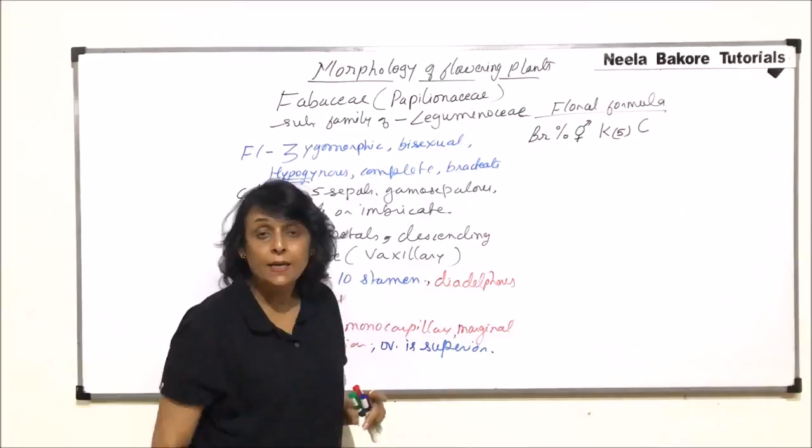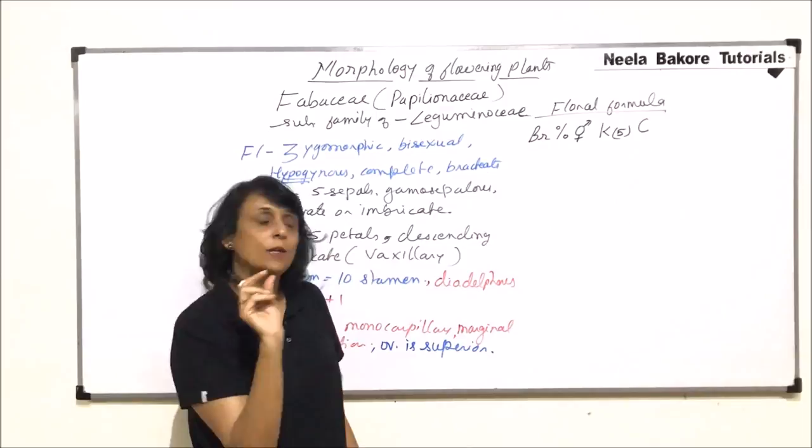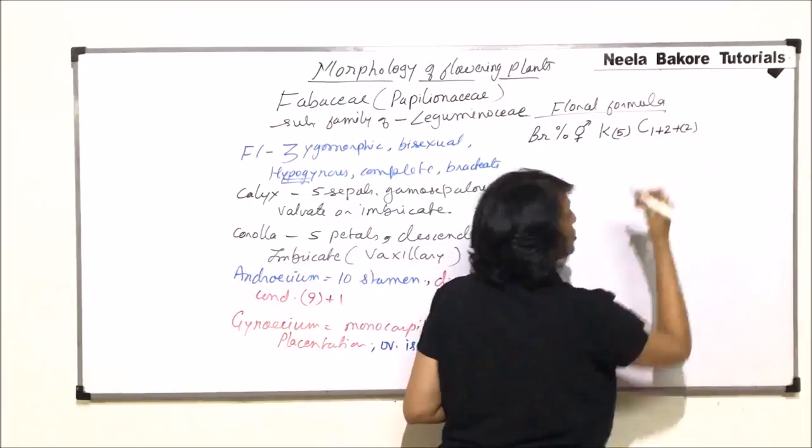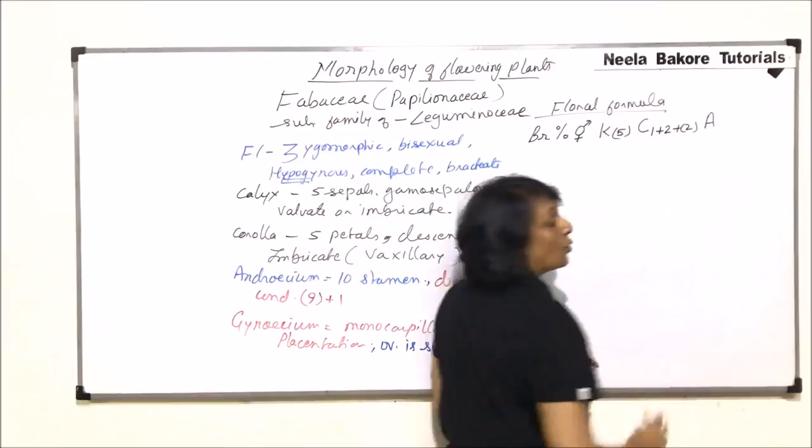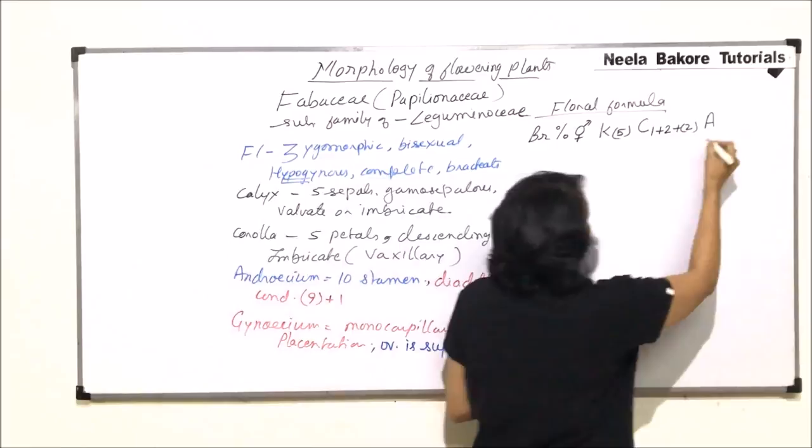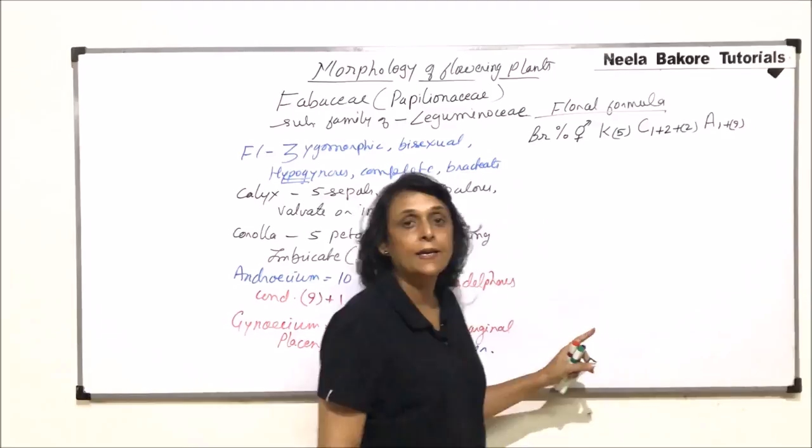Corolla, 5. But the upper one is standard. Then there are 2 lateral and the 2 anterior ones are fused. So we write it as 1+2+2. The last 2, that is anterior 2, are fused. Androecium total 10. But they are arranged in 2 bundles. We write it as 1+9 which are put in the bracket.